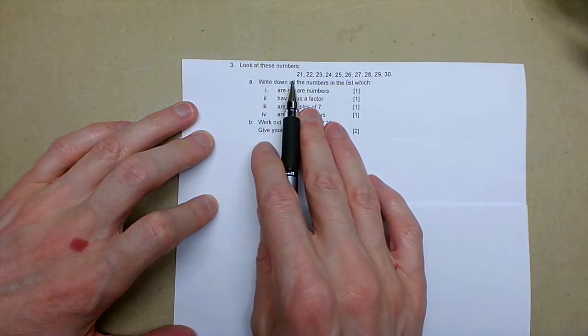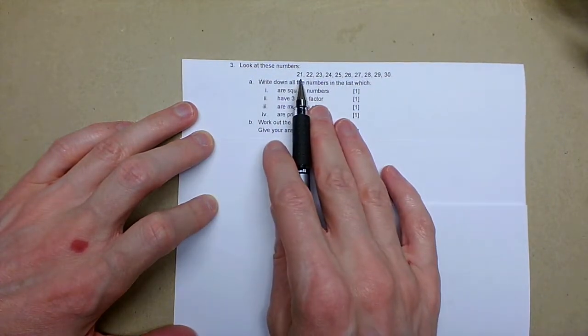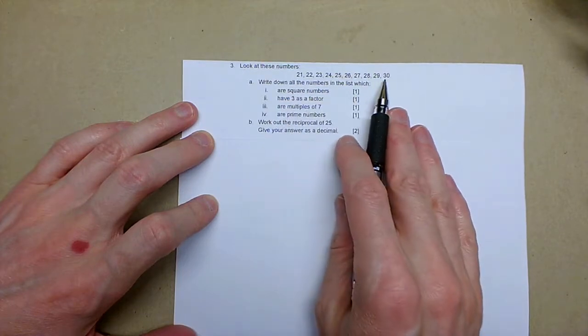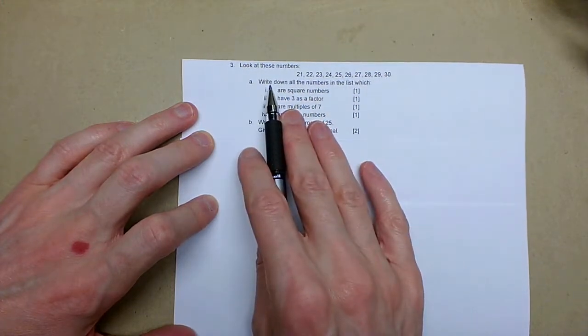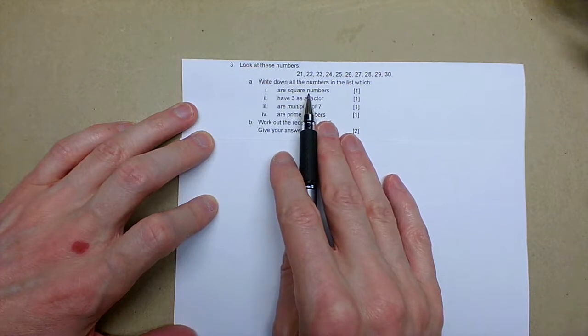Okay, this is the third question, this is a number question, and it gives us a sequence of numbers 21 through 30. And we need to write down all the numbers in the list that are square numbers.